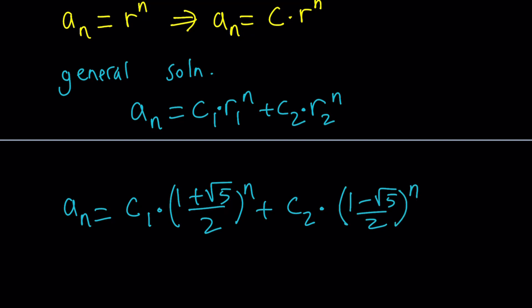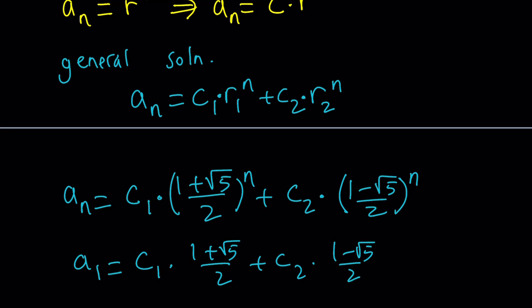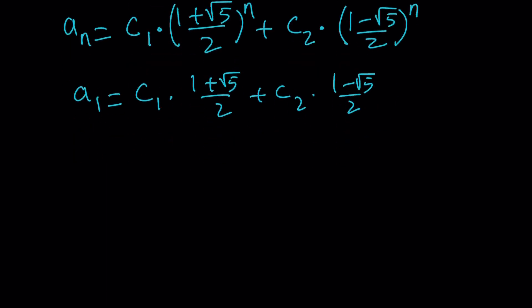So that will be the general term. Wait a minute. Can we determine c1 and c2? Actually, not without knowing some terms, such as a1 and a2. So currently, a1 would be c1 times 1 plus root 5 over 2 plus c2 times 1 minus root 5 over 2, and a2 would be found similarly. But here's the thing: this is a special sequence. So if I gave you the first two terms, then here's how it proceeds. Suppose a1 equals a2, and they're both equal to 1. What would happen in that case?